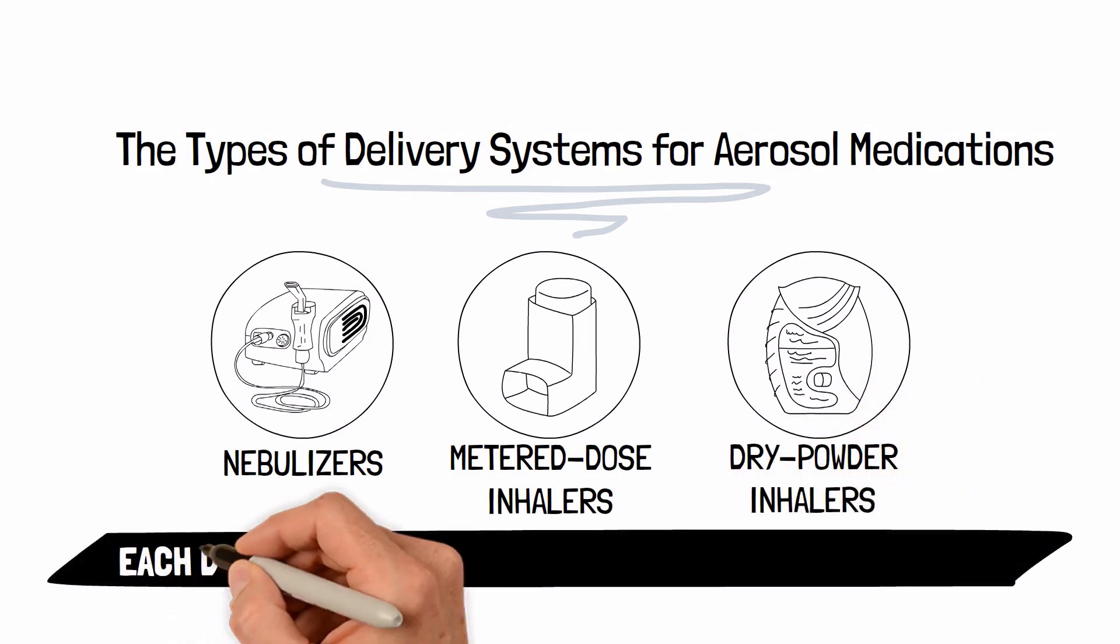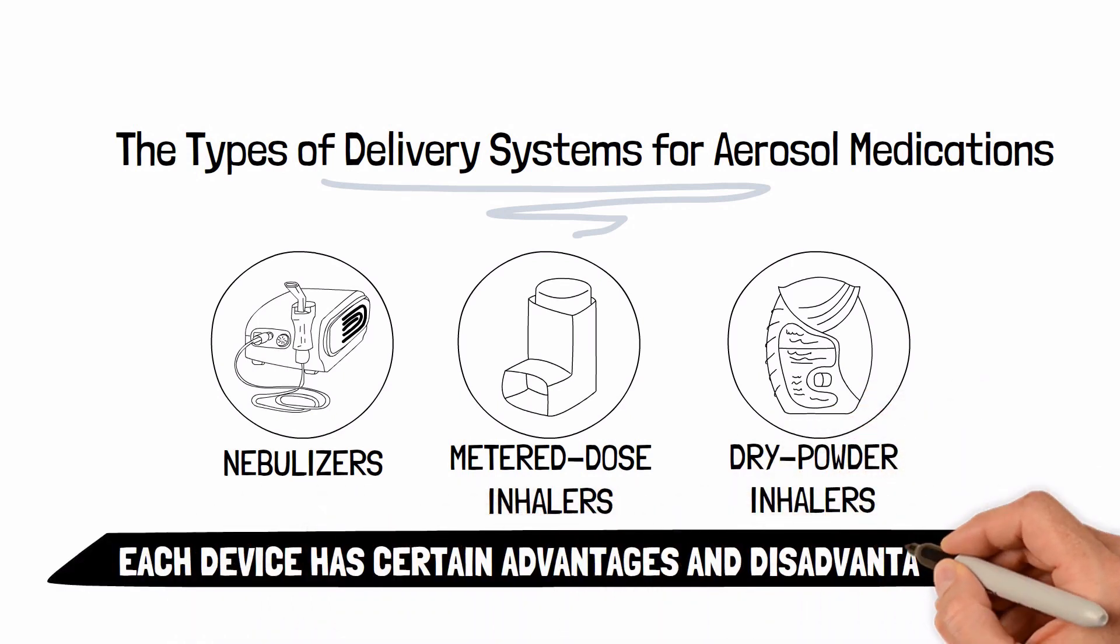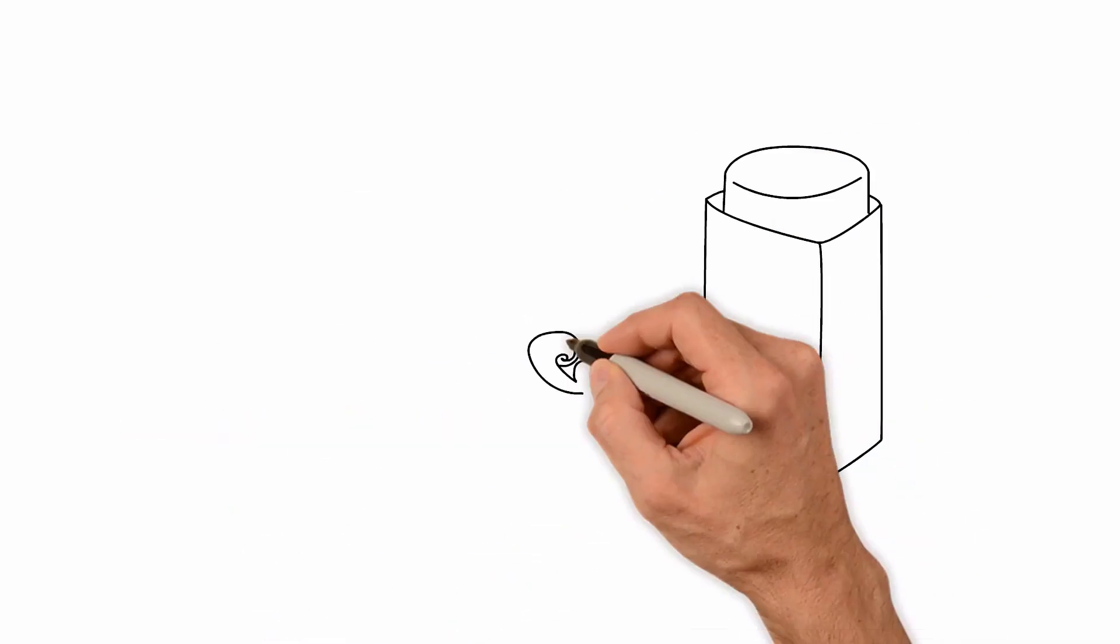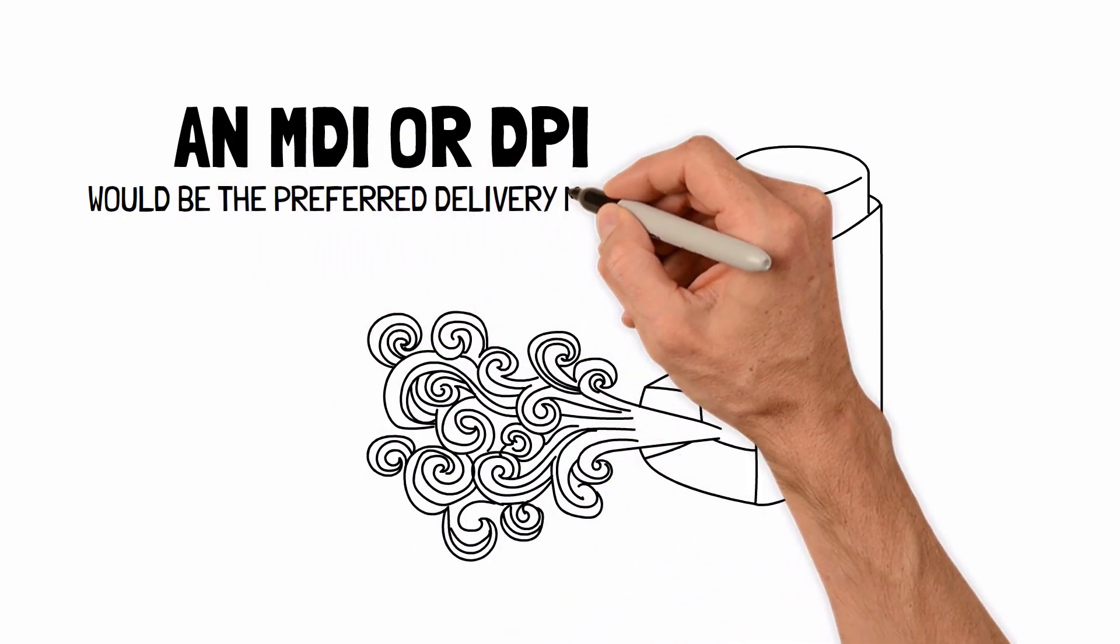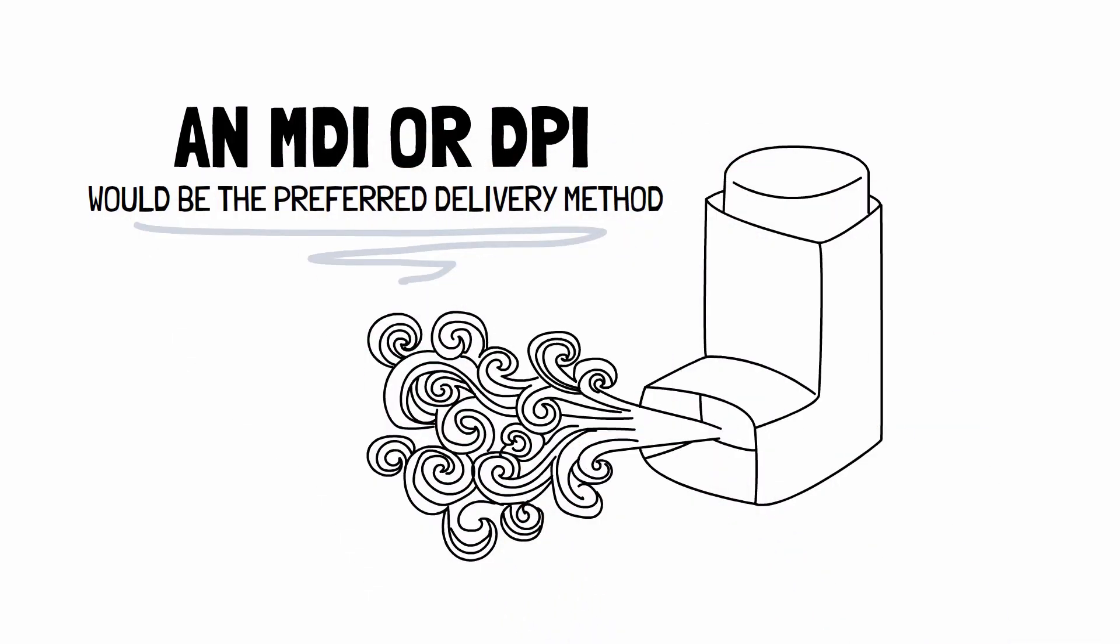Each device has certain advantages and disadvantages for different types of patients. To give a simple rule of thumb, in general, an MDI or DPI would be the preferred delivery method as long as the patient is able to take the medication using the proper technique.